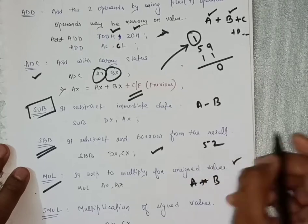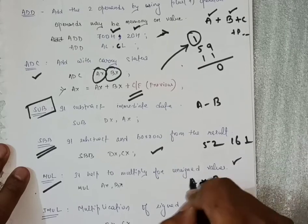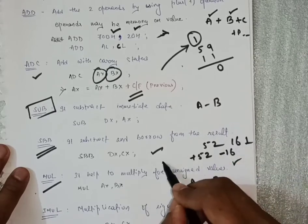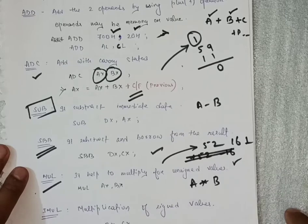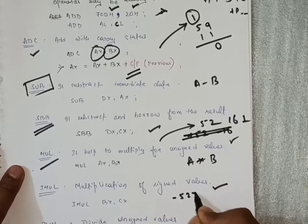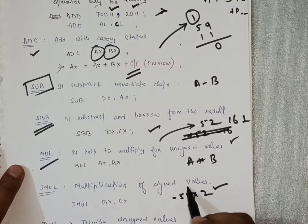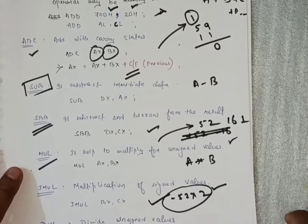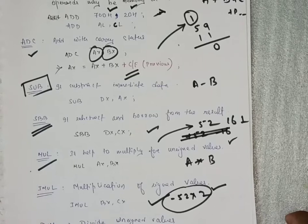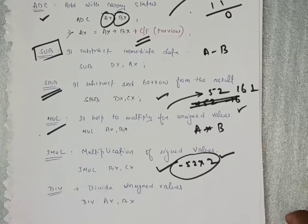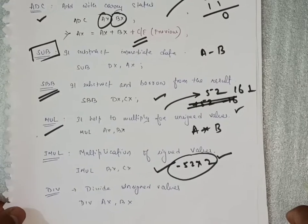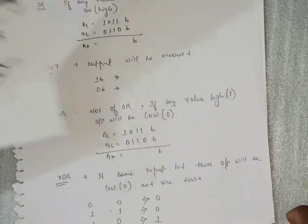Unsigned means no sign — for example, 52 has no sign, 16 has no sign. But if a value is negative like minus 52 or minus 16, that is a signed value. MUL works only for unsigned values. For signed multiplication, like minus 52 into 2, you use IMUL. For division of unsigned values, use the DIV instruction. That's all about arithmetic instructions.